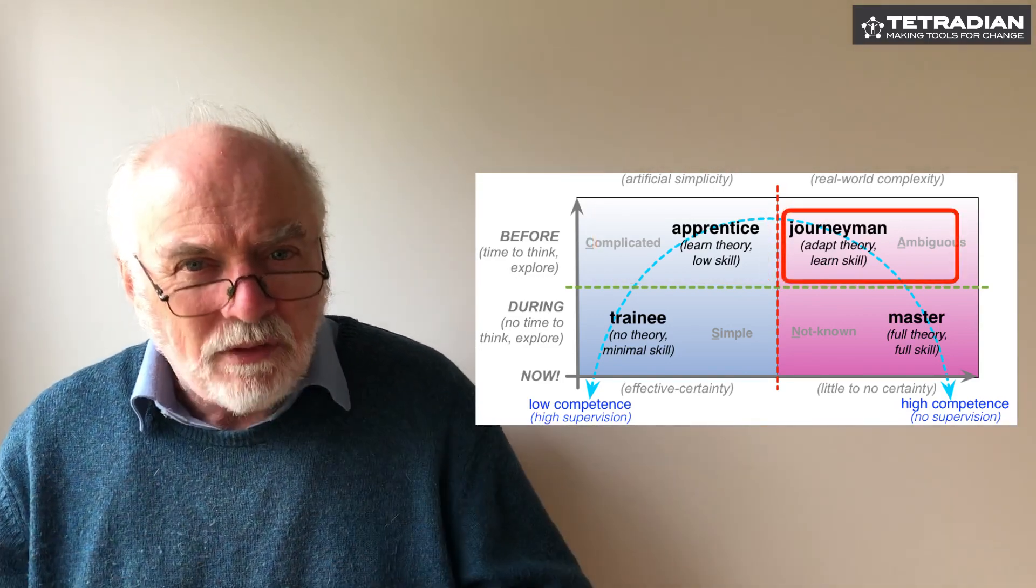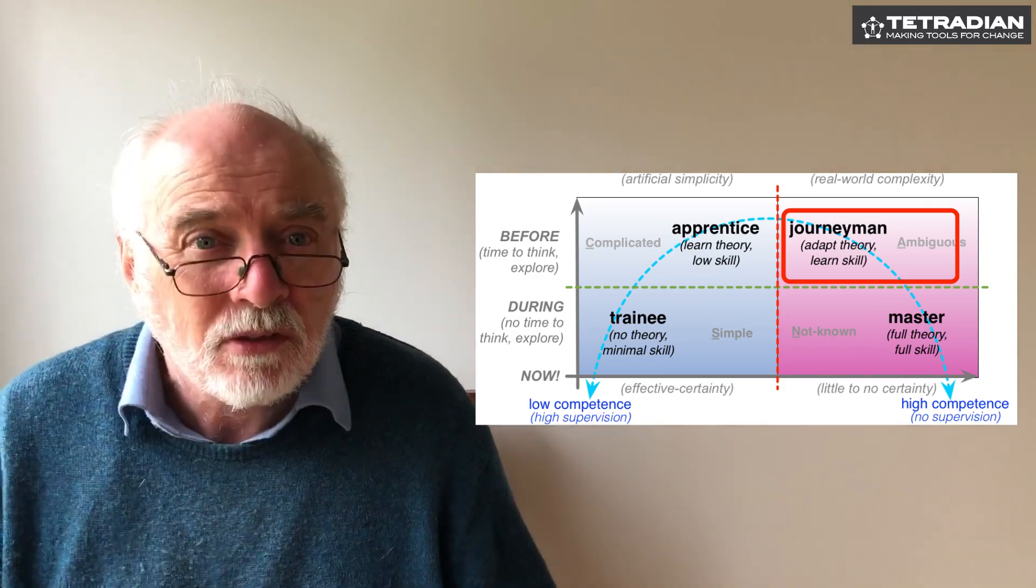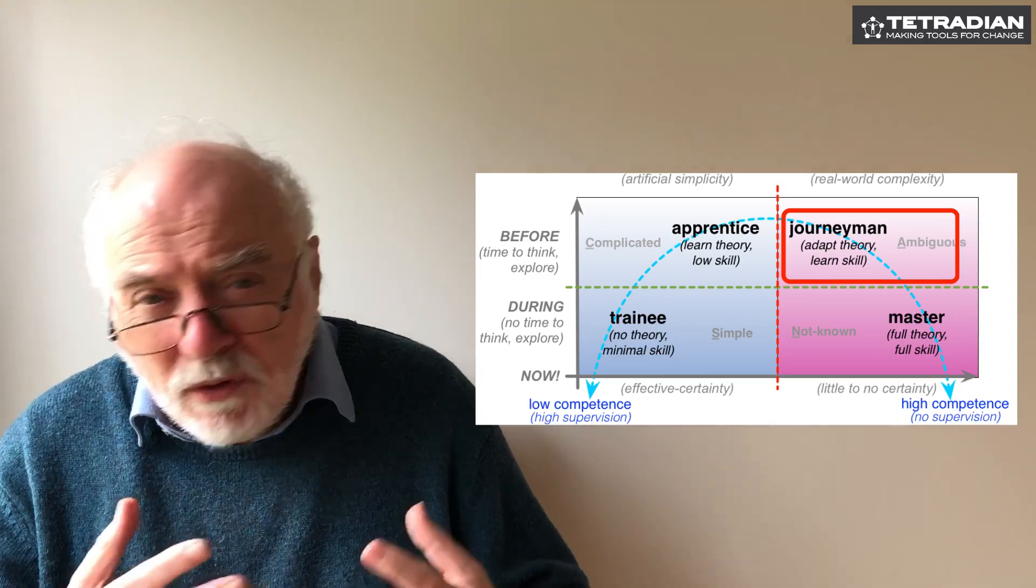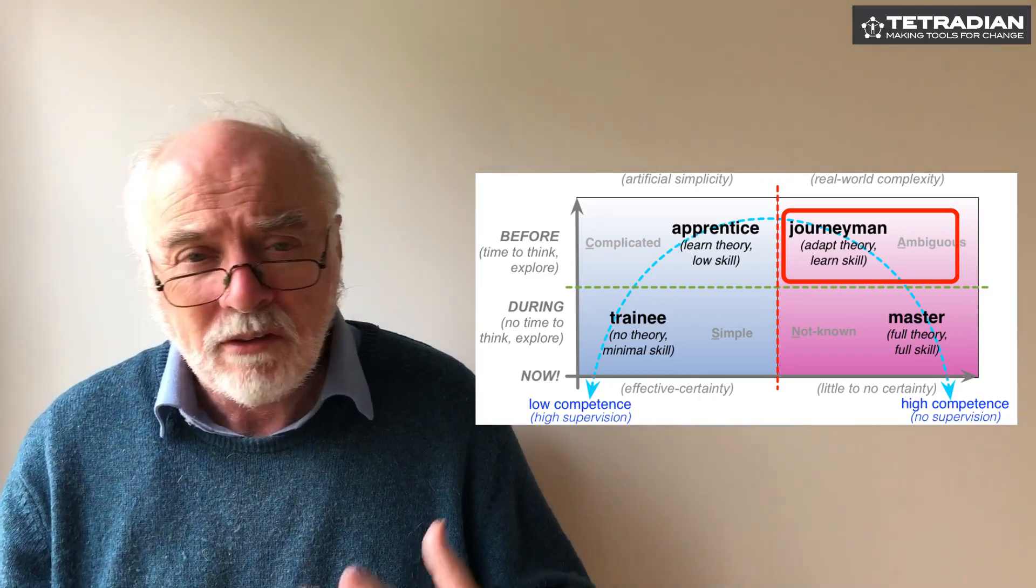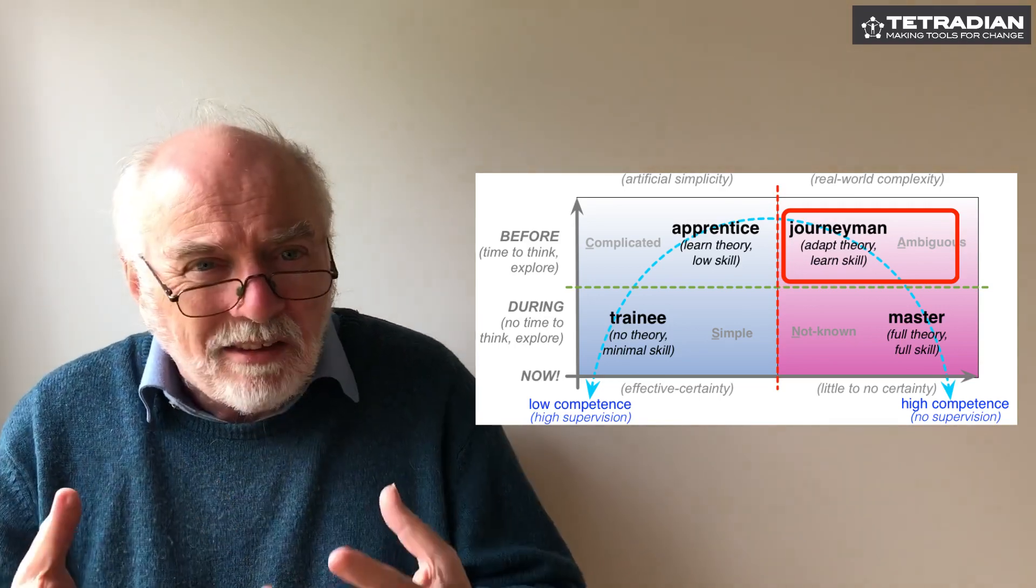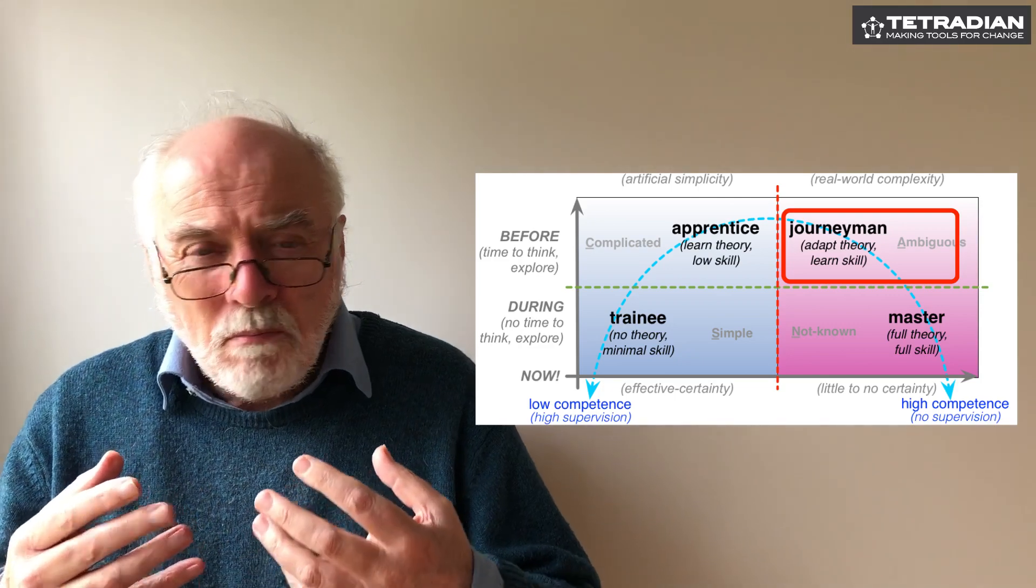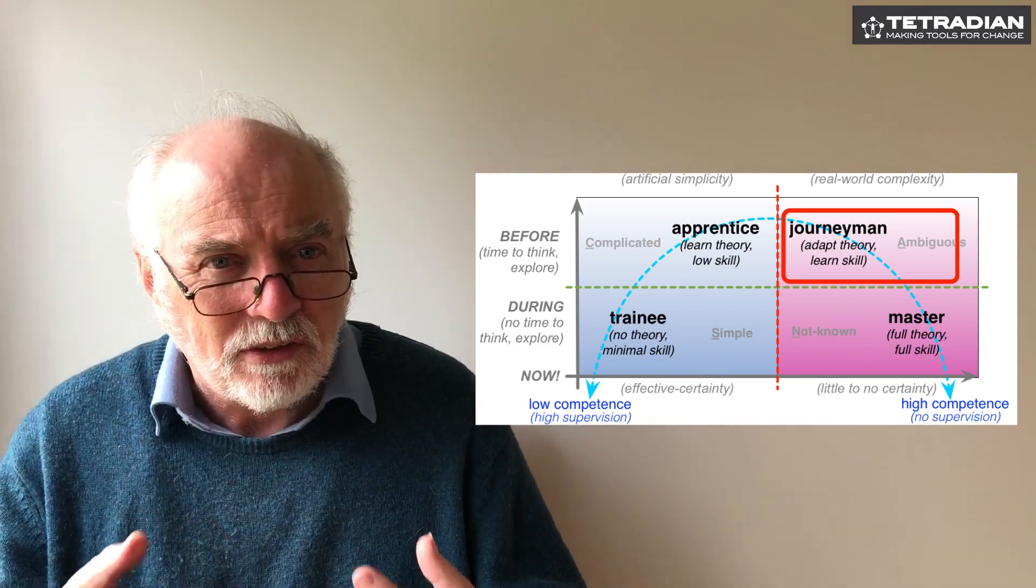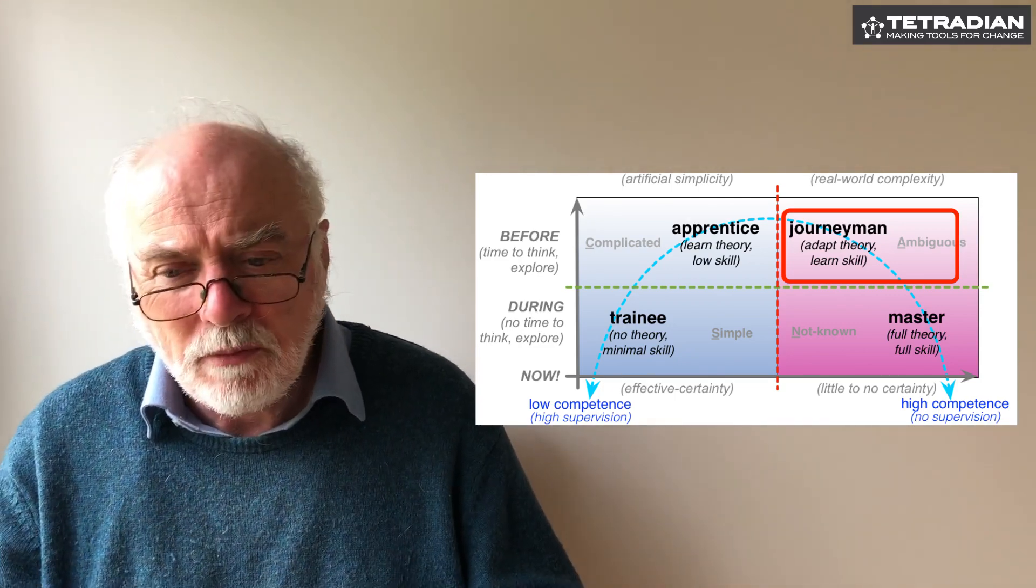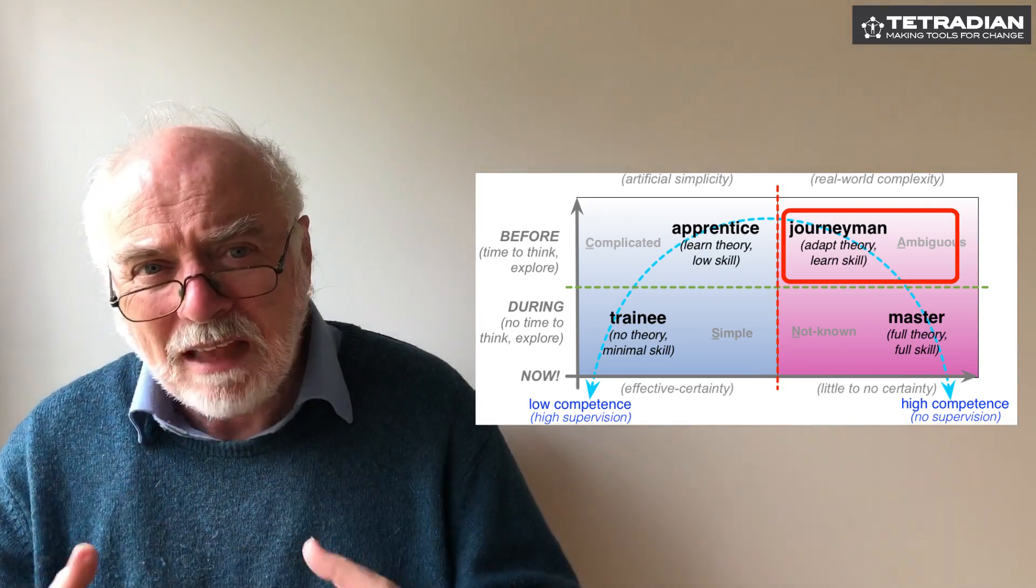A journeyman is the next level up, has to be able to deal with higher levels of uncertainty, actually beyond the boundary of certainty. This is the first real level of skill as opposed to just simply rote learning. They are dealing with patterns and guidelines, those kind of mild, mid-level uncertainties. But they're still expecting to be supervised and also while they're learning, they're not at the point of action.